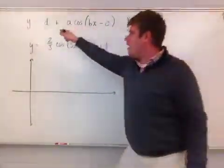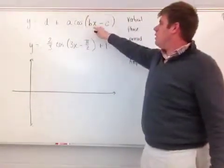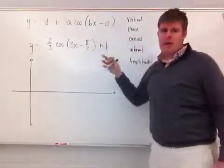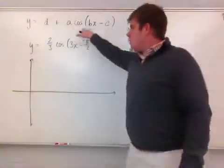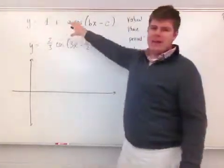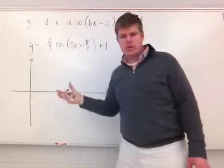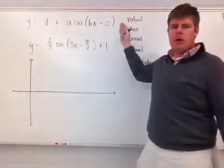What I have written up here is y equals d plus a cosine of the value of b times x minus c, that quantity. This is the generic equation for all functions, where if you have some value and you're adding it to your actual function, that is your vertical shift. This d can be either on the left or on the right.